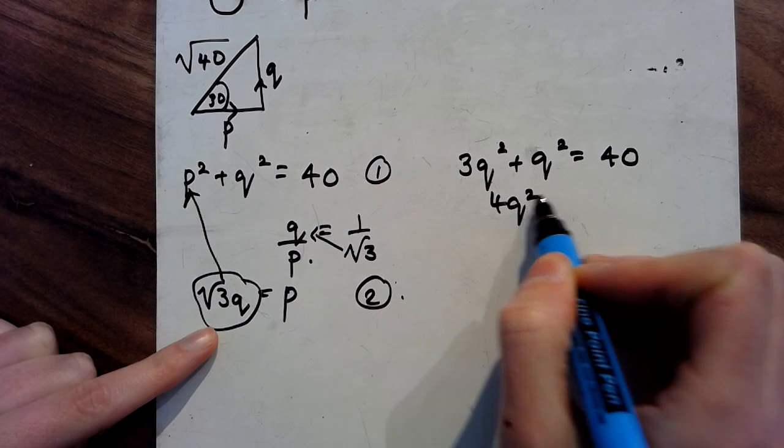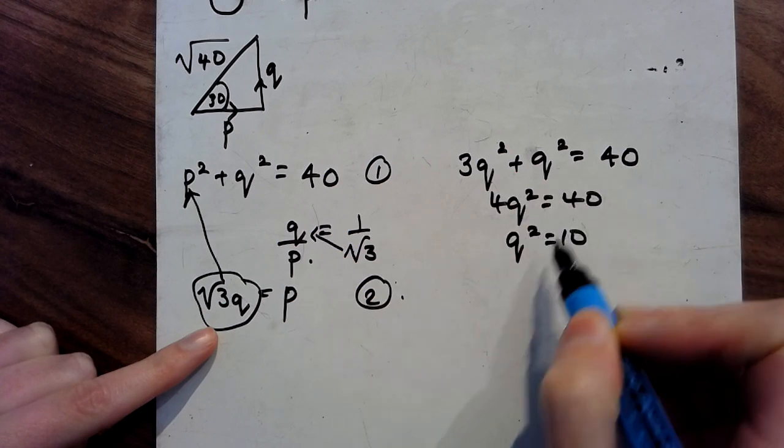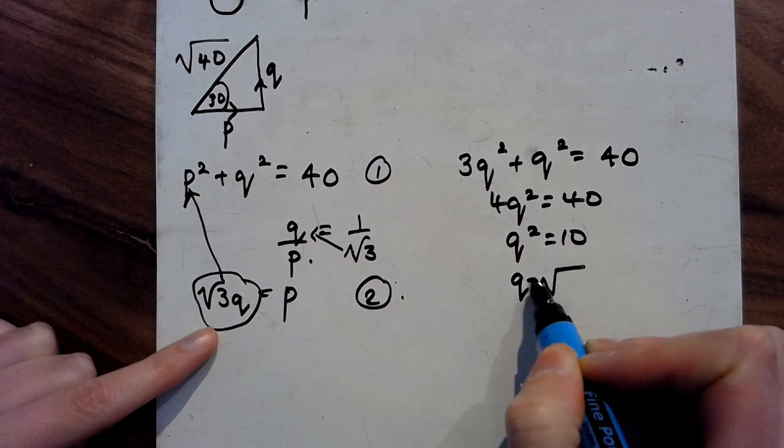So that's 4Q squared is 40. So Q squared is 10, so Q is square root of 10.